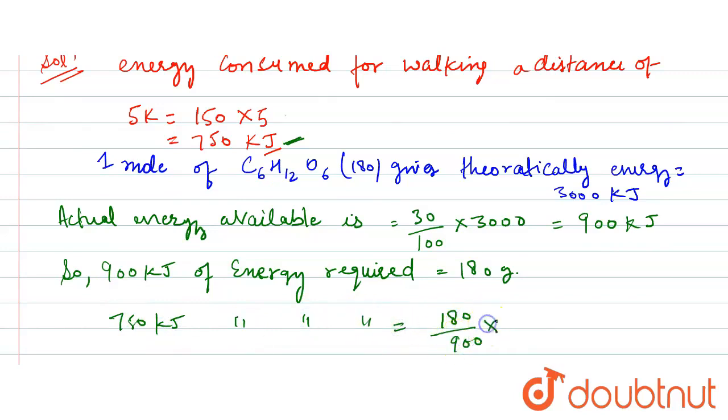180 divided by 900 multiplied by 750 is equal to 150 gram. So it's our solution for this question. Thank you.